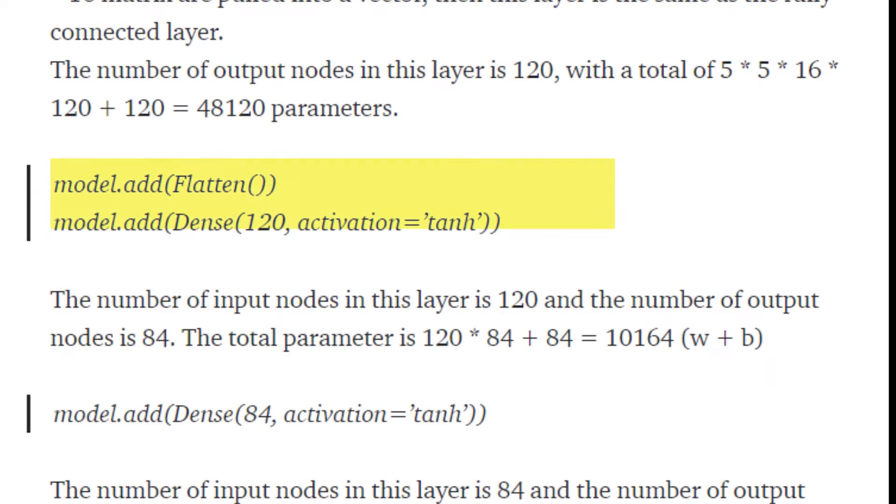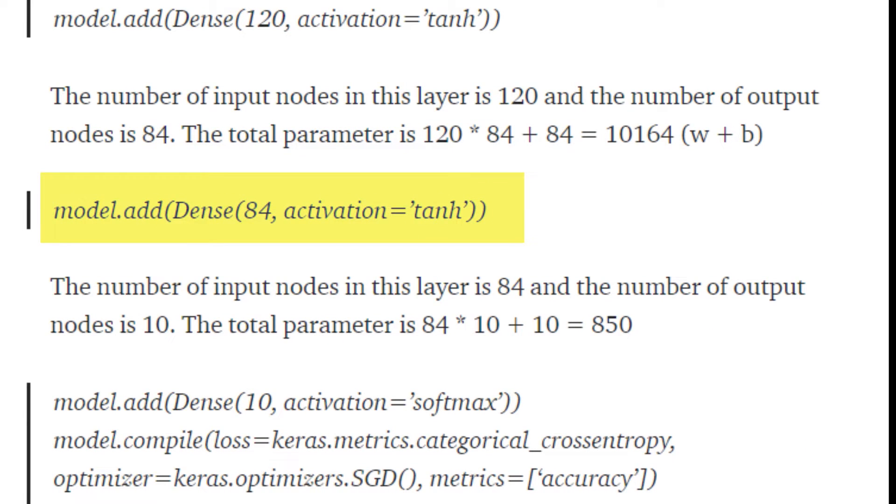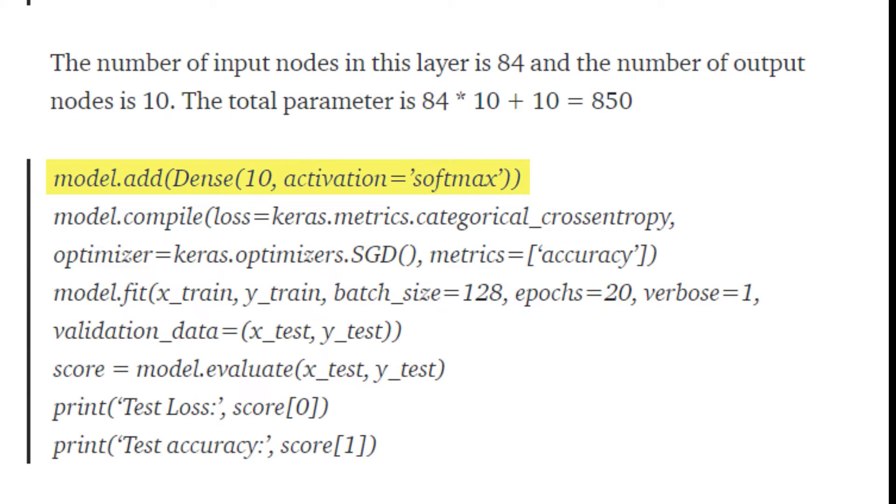Then we apply the flattening layer, which flattens our 2D matrix into a 1D array. We apply fully connected layers with activation tanh. Lastly, we apply the softmax function to classify our output images.